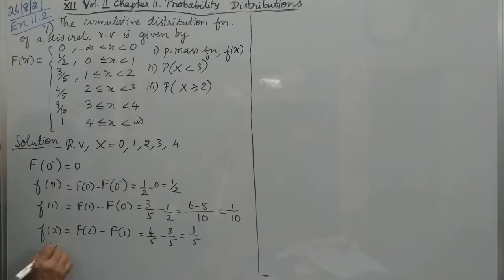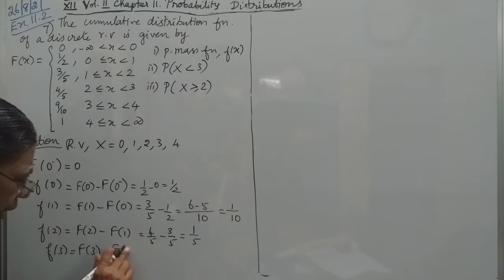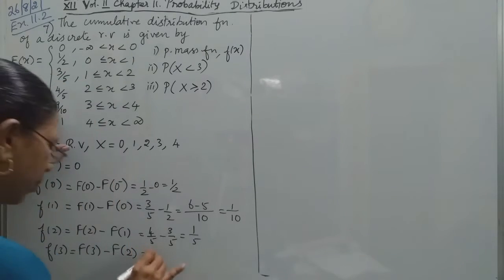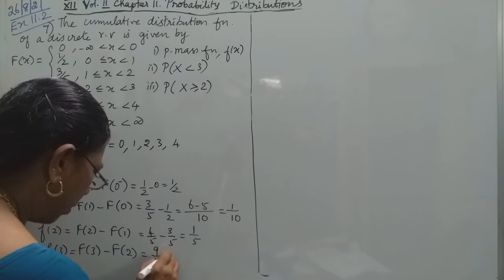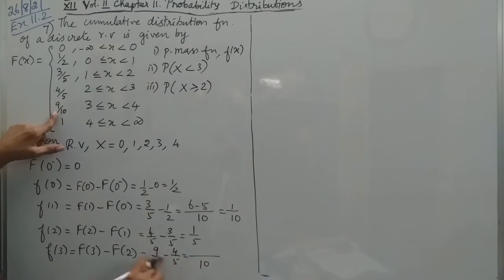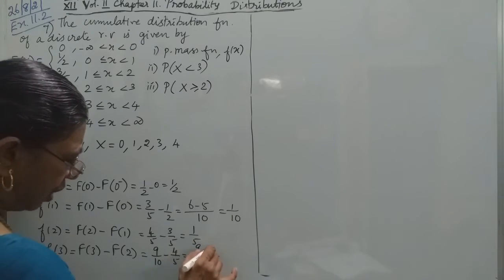The next one is small f(3), capital F(3) minus capital F(2). 3 is equal to... so 9/10 minus 4/5. The LCM is 10, so 9 minus 8, that equals 1/10.